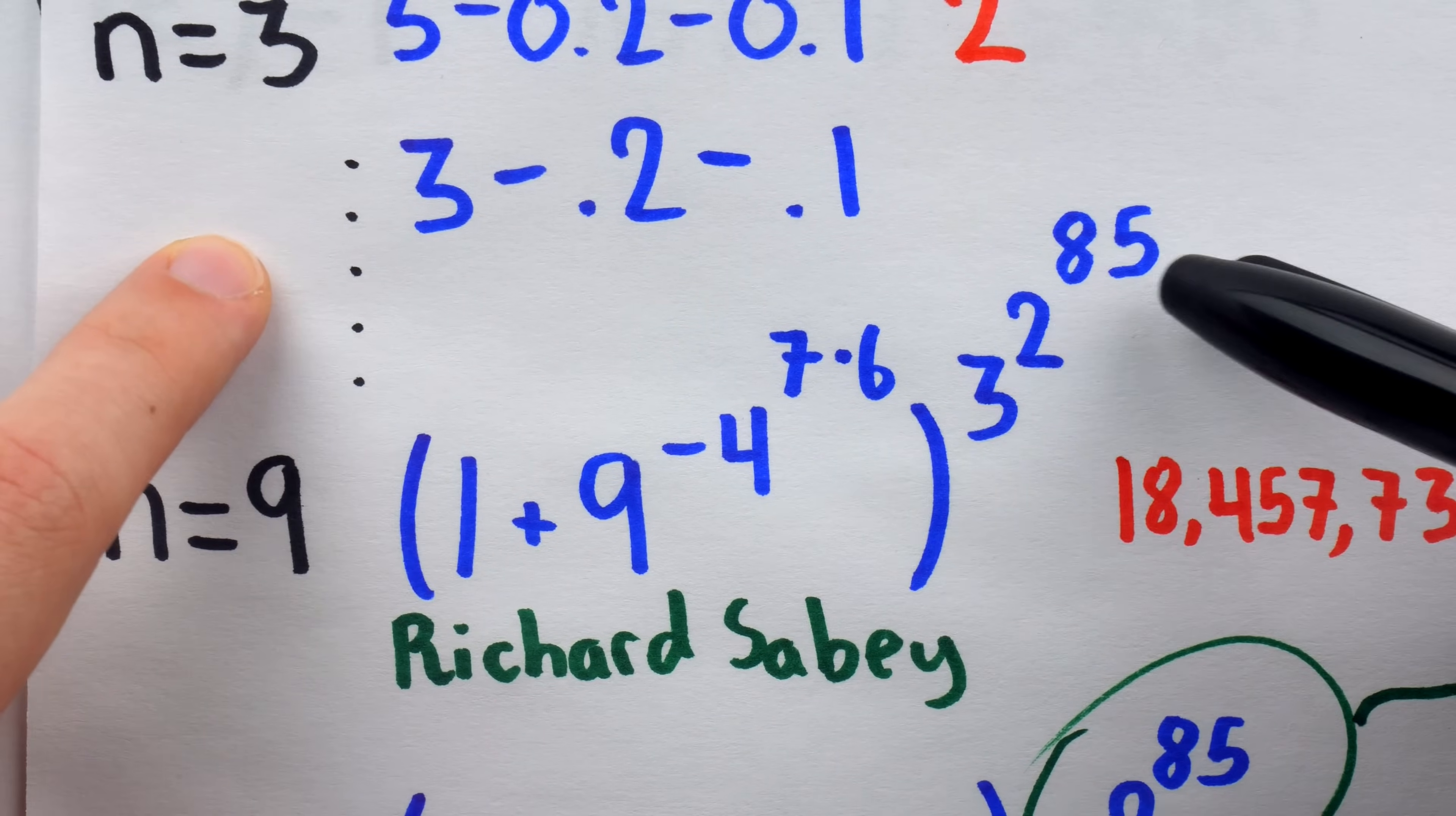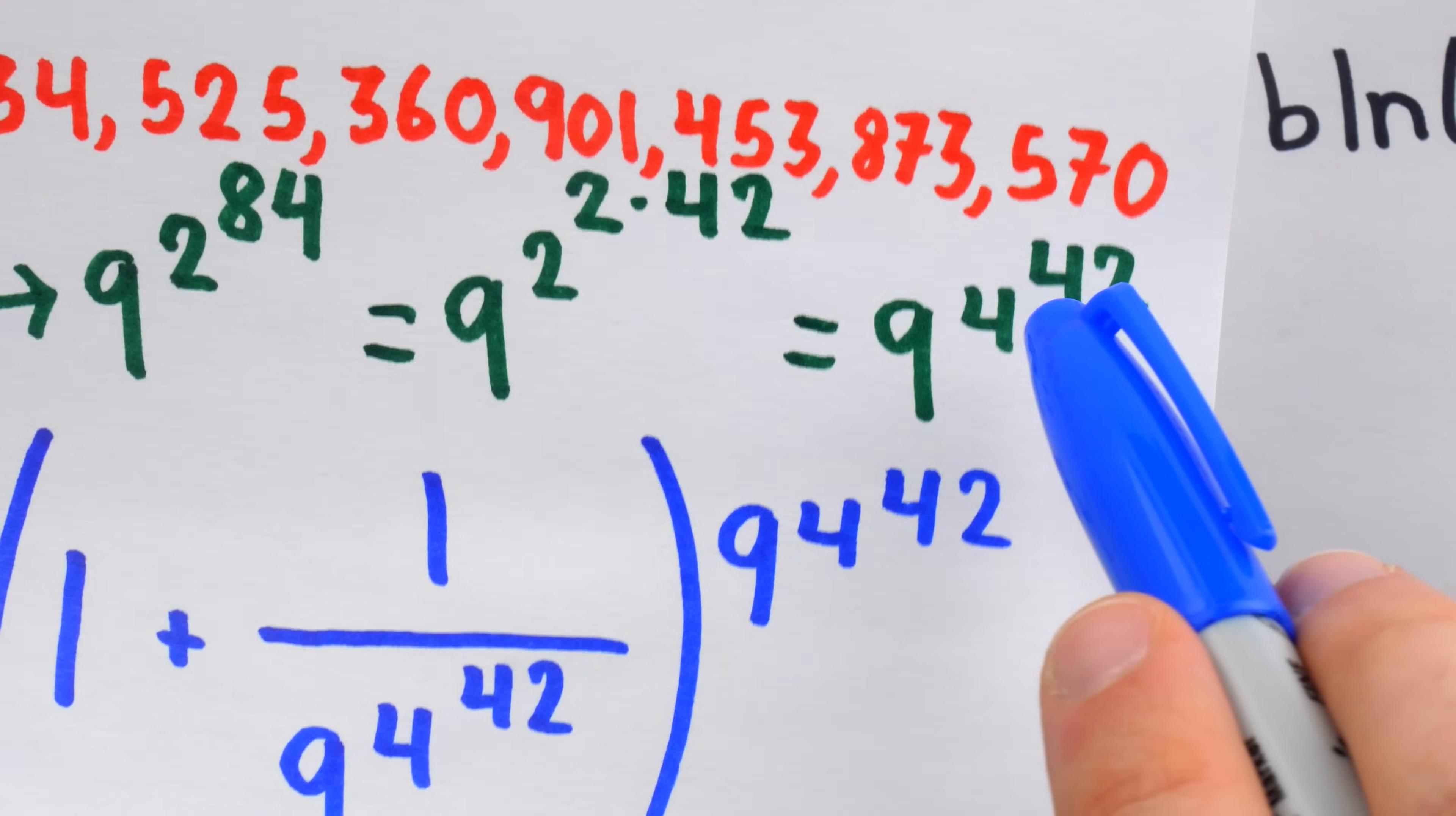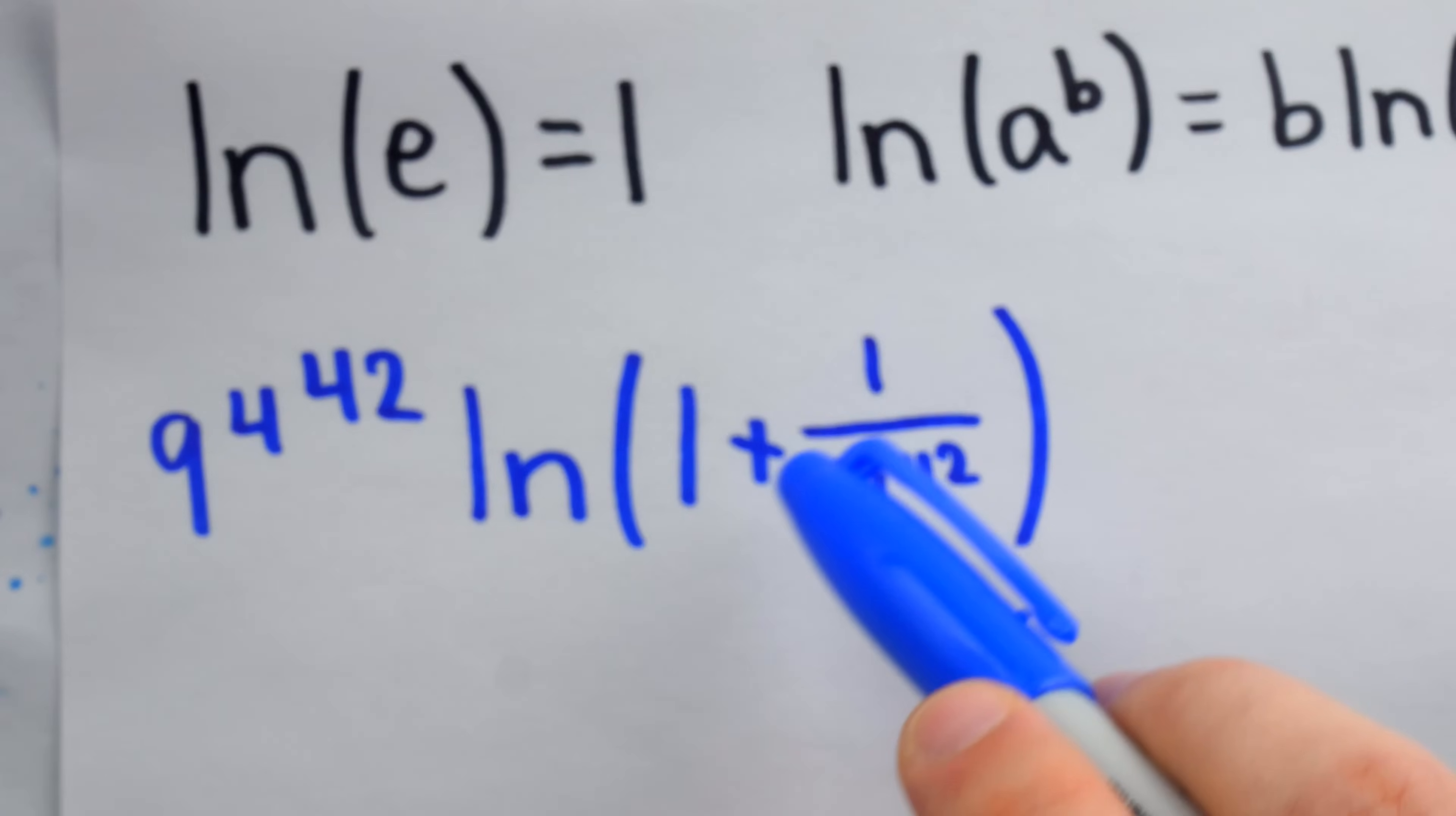So we're going to take the natural log of Richard Sabey's approximation. Note the approximation has this power, so we're going to take that power out as a factor. So when we take the natural log, this is what we get. This exponent, which we've already shown is the same as 9 to the 4 to the 42. We've taken that out as a factor. So we have 9 to the 4 to the 42 out here as a factor times the natural log of 1 plus this, which is this.